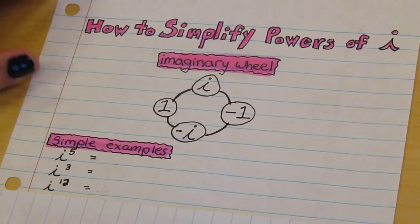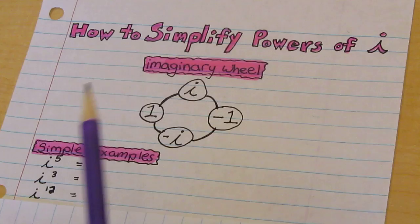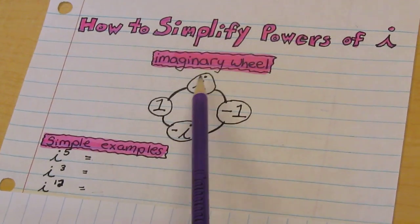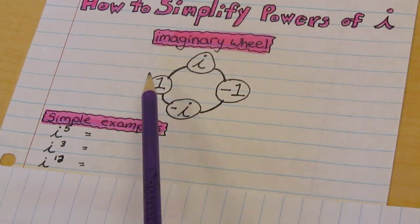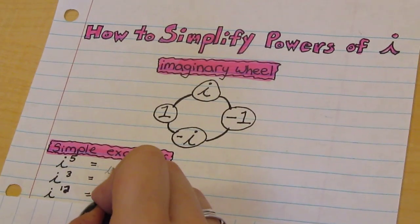For our simple examples we have i to the fifth. So we start at the top and we move to five. One, two, three, four, five. That means our answer is i.